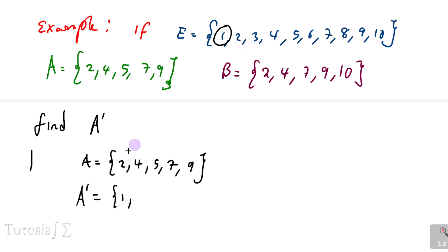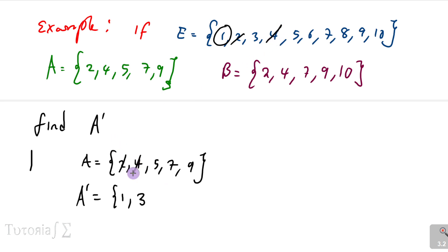Looking at the universal set: we have 1 — not in A, so write 1. We have 2 — in A, so no. We have 3 — not in A, so write 3. We have 4 — in A, so cancel. We have 5 — in A, so no. We have 6 — not in A, so write 6.